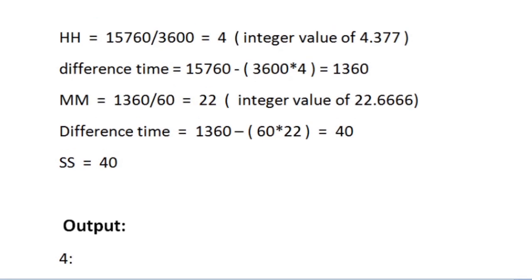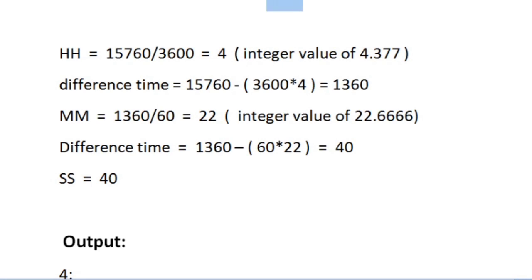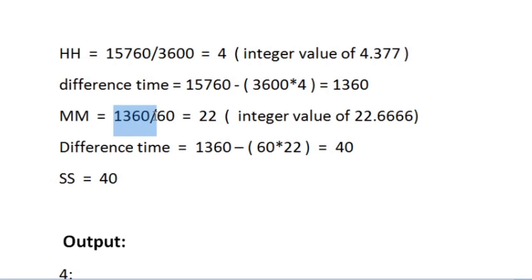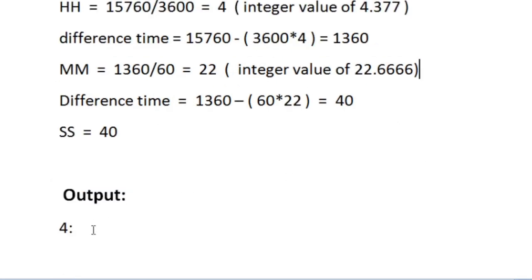Now we calculate the maximum possible minutes in the remaining seconds. Out of 15760 seconds we have utilized 4 hours, which is 4 × 3600 seconds. Subtracting gives a difference time of 1360 seconds. Dividing 1360 by 60 gives 22.666, and again we take the integer part — so 22 minutes. We now have 4 hours and 22 minutes.